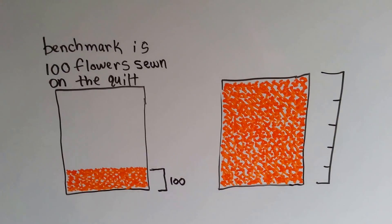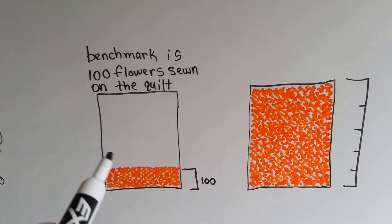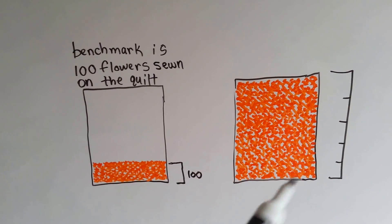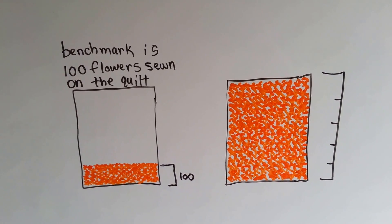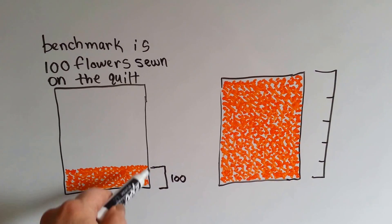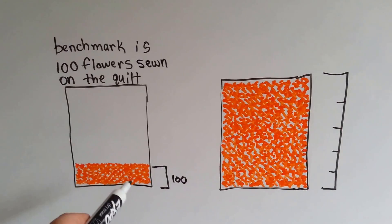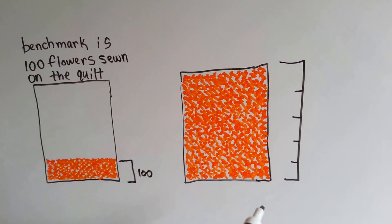What if one of your grandparents or your aunts or uncles made a beautiful flowered quilt and they embroidered all these flowers on there? It took them two years to make this beautiful quilt, and you were curious how many flowers were on it. Well, if you knew that this amount was 100 embroidered flowers, you'd be able to use that as a benchmark to figure out how many are on the entire quilt.